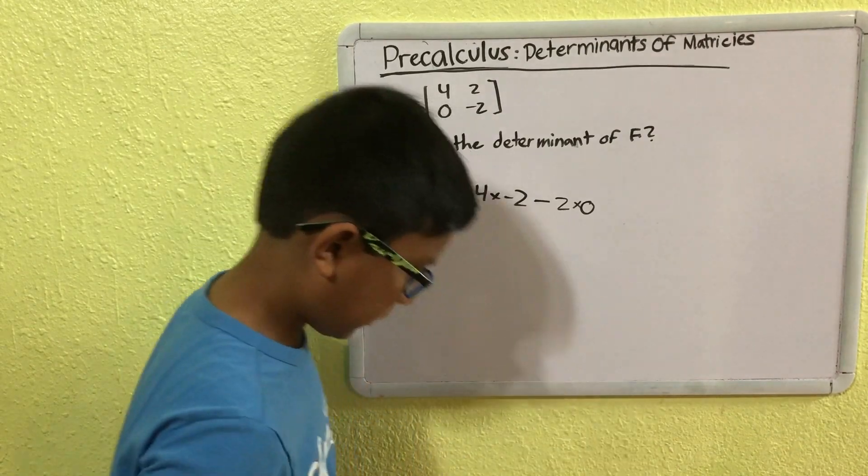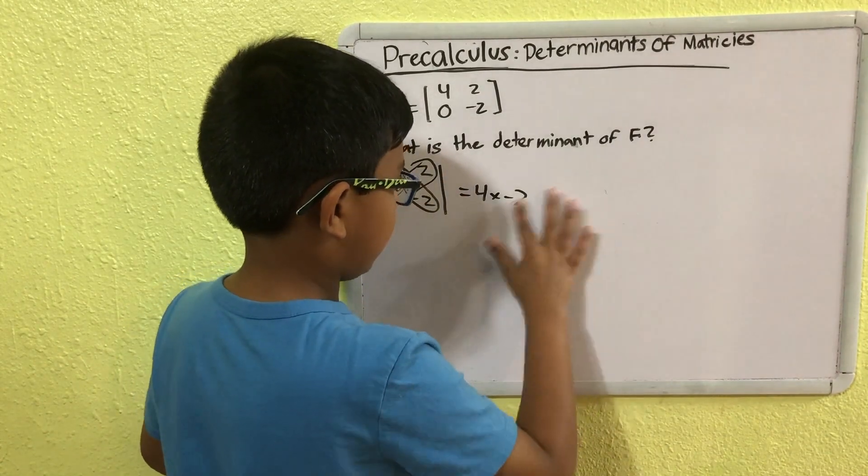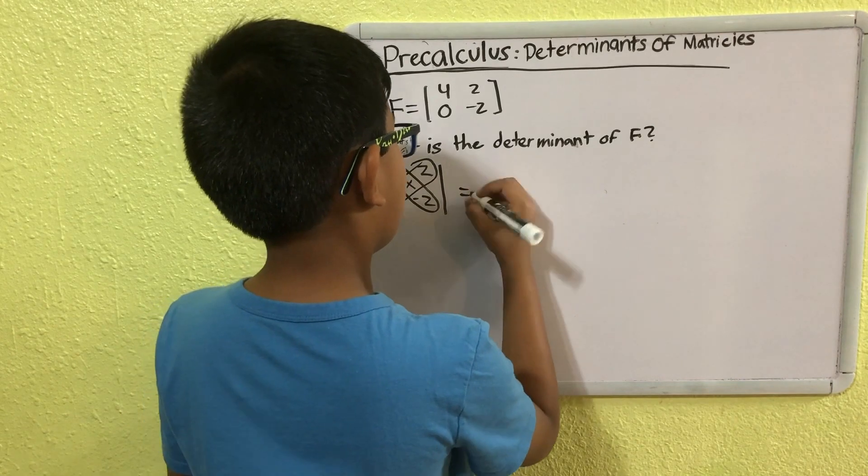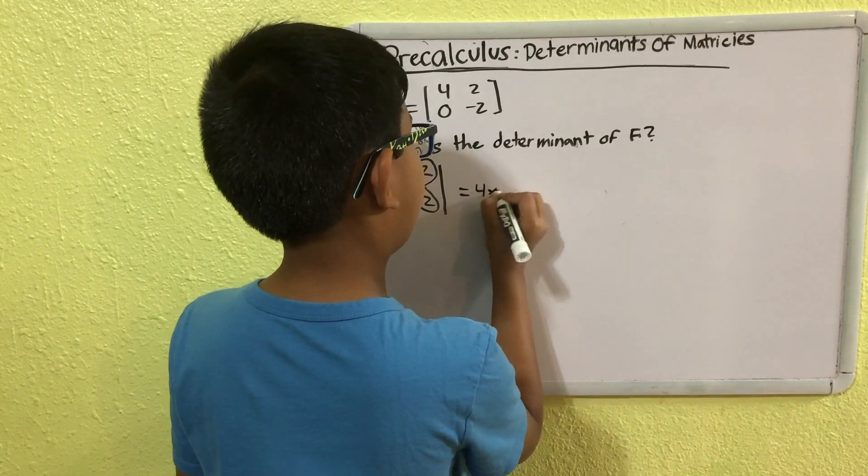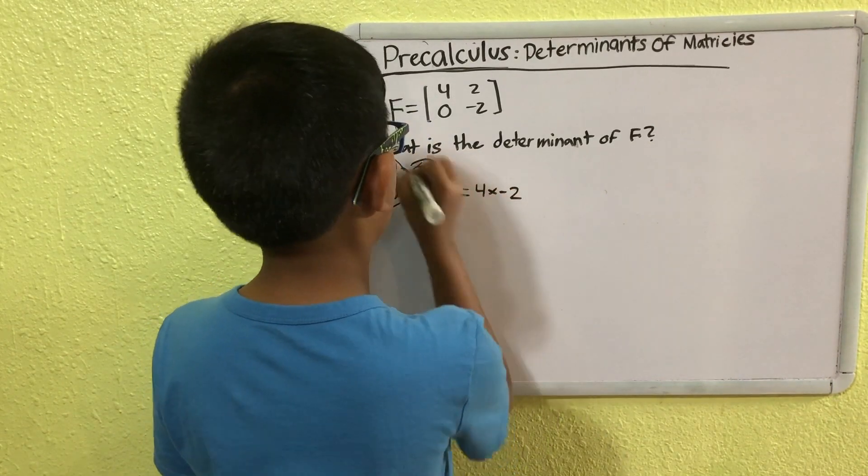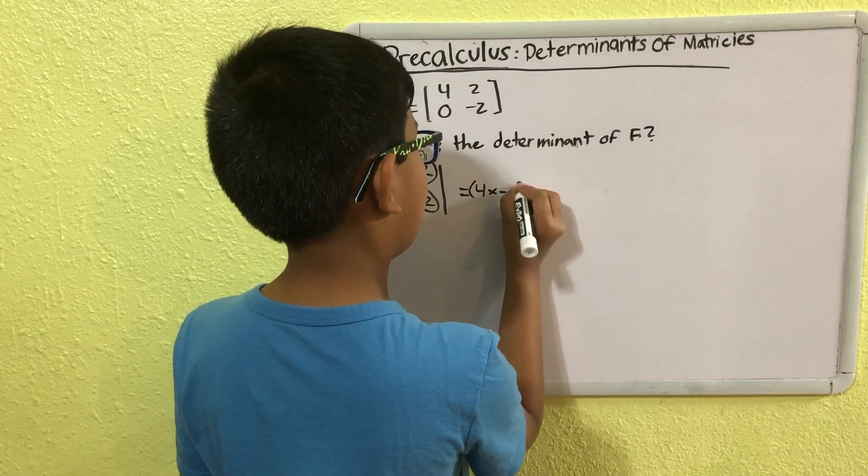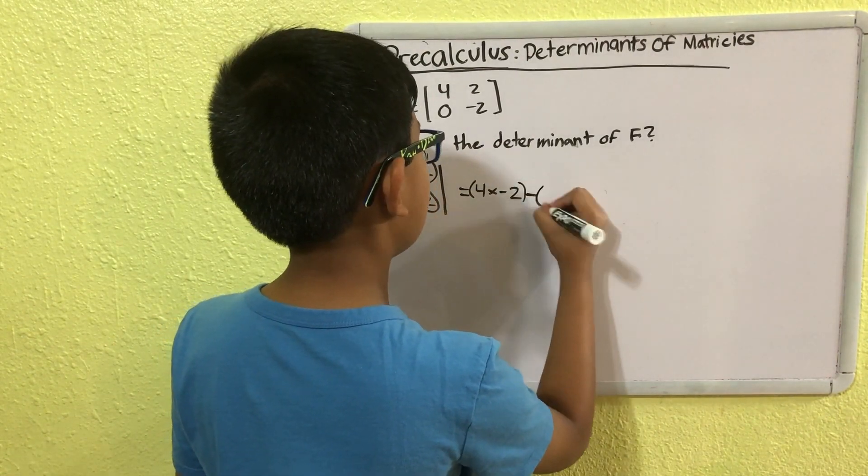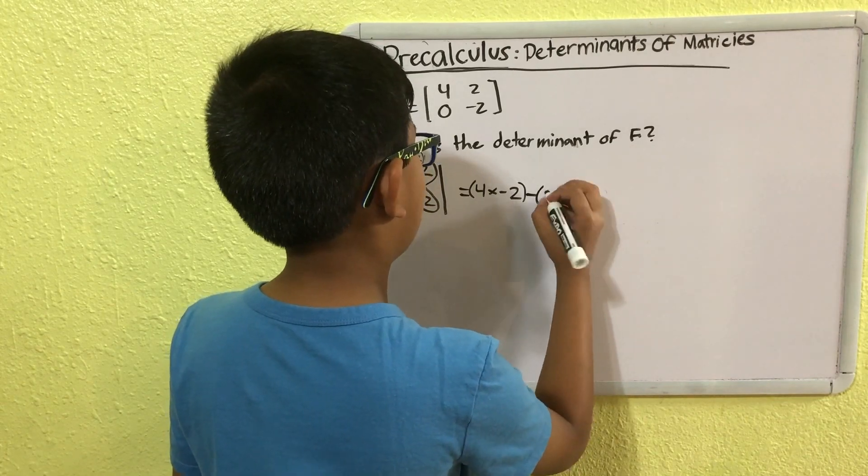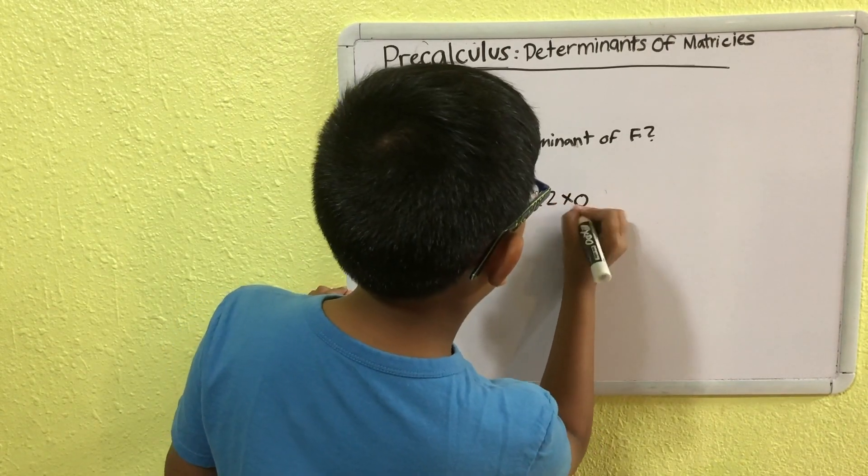Wait, let me rewrite this. 4 times minus 2, this is this cross product, minus, and then we take this, 2 times 0.